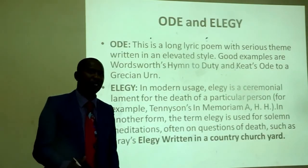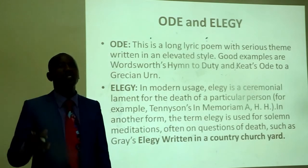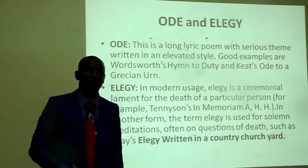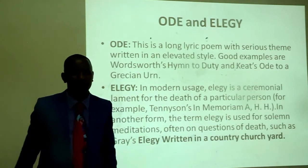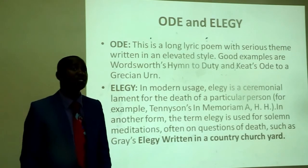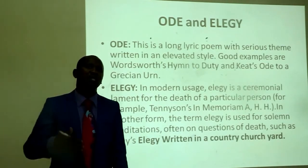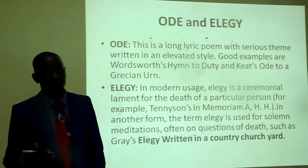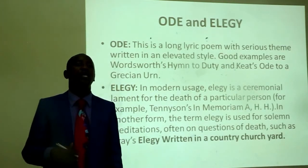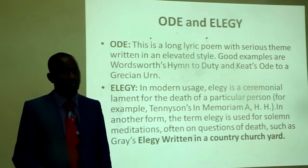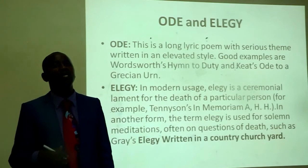What is an ode? An ode is a long lyric poem with a serious theme written in an elevated style. Good examples are Wordsworth's 'Ode to Duty' and Keats's 'Ode to a Nightingale'. What is an elegy? In modern usage, an elegy is a ceremonial lament for the death of a particular person — for example, Tennyson's 'In Memoriam A.H.H.' In another form, the term elegy is used for solemn meditations, often on questions of death — such as Gray's 'Elegy Written in a Country Churchyard'.